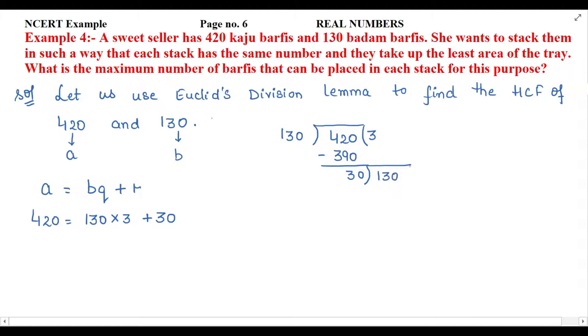When you multiply 30 by 4, you will get 120. So 130 minus 120, that will be 10.